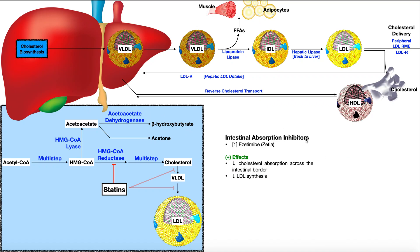The fifth class of medication is called the intestinal absorption inhibitors. About 75% of cholesterol is made de novo, but the other 25% is taken in through the diet — and that's what these drugs target. They simply prevent cholesterol from being absorbed from the intestinal lumen into the blood, so more of that cholesterol is lost in the feces. This decreases cholesterol absorption across the intestinal border, decreases the total body cholesterol available for output into VLDL and LDL, and therefore results in less LDL synthesis.